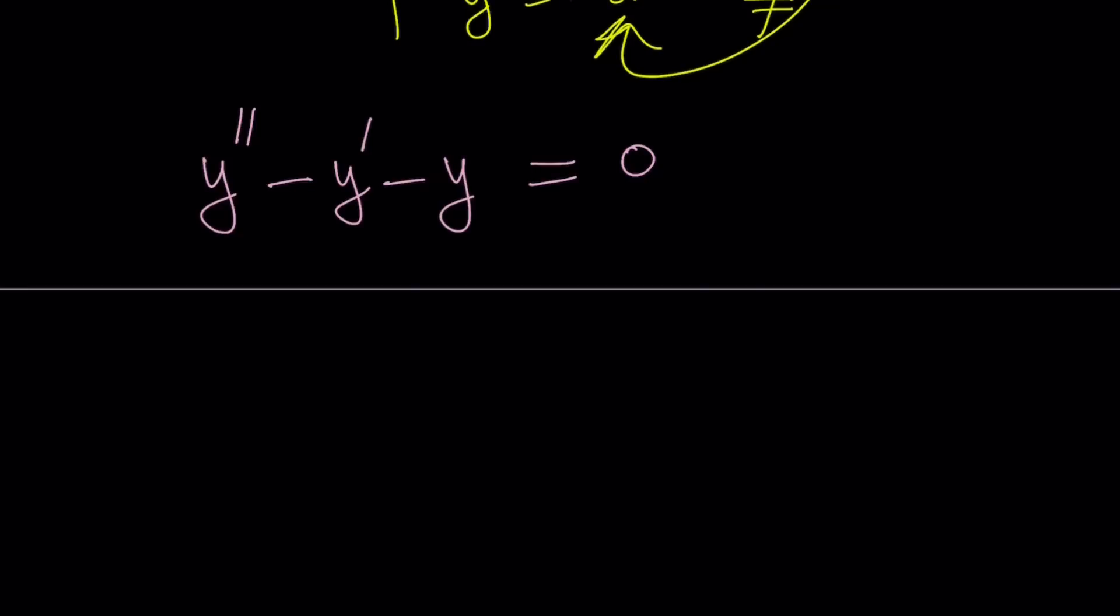So what does that look like? If D, the capital D, is our differentiation operator, then it kind of looks like the following. And differentiation operators are interesting because there are certain rules that govern them. But we can write this as D squared minus D minus 1, operating on the y, and that is equal to 0.